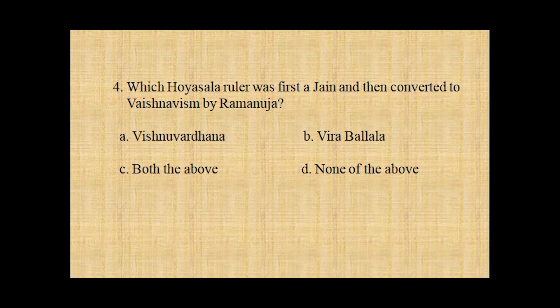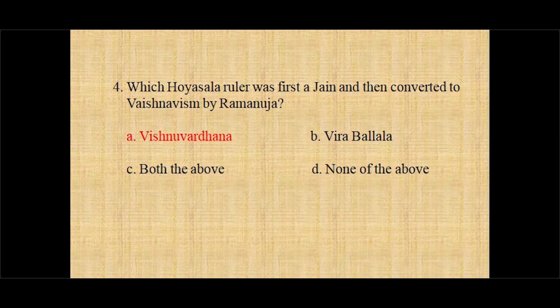Question number four: Which Hoysala ruler was first a Jain and then converted to Vaishnavism by Ramanujacharya? Option A Vishnuvardhana, option B Veera Ballala, option C both the above, option D none of the above. And the correct answer is option A, Vishnuvardhana.